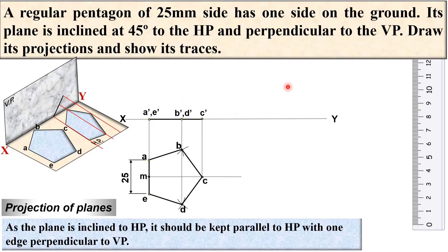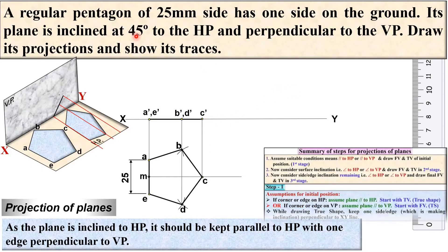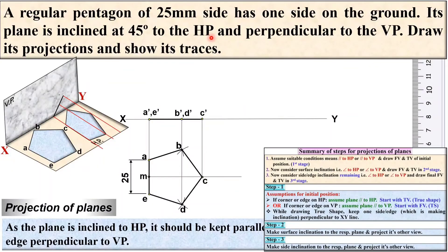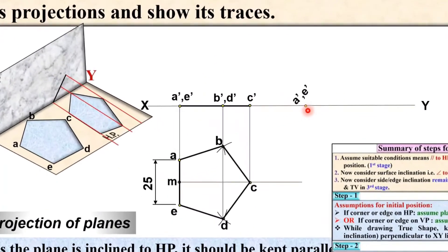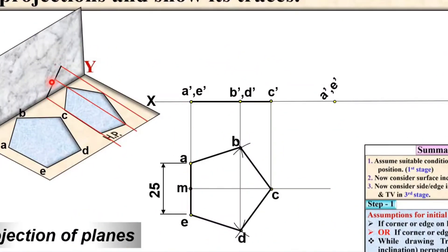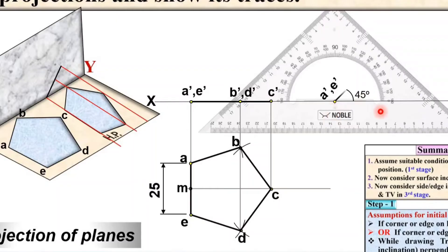In the second stage it must be inclined to HP. You know that if the plane is inclined to HP, you can see the angle in the front view. So you have to replace this front view. Take the inclination given as 45 degrees to HP — in step 2 you consider the surface inclination of 45 degrees to HP. First take any one point, give the name A-dash E-dash on the XY line, and draw this front view line at 45 degrees using a set square.